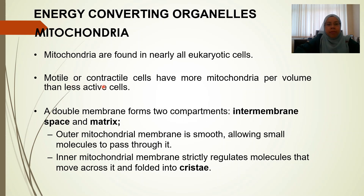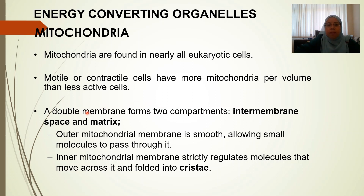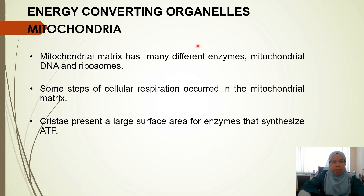The double membranes of mitochondria form two compartments: the intermembrane space and the matrix. The intermembrane space is the narrow region between the outer and inner membranes, while the matrix is enclosed by the inner membrane. The outer mitochondrial membrane allows some molecules to pass, while the inner membrane strictly regulates molecules that move across it. The matrix contains many different enzymes, mitochondrial DNA, and ribosomes.